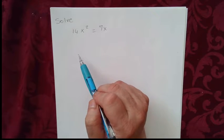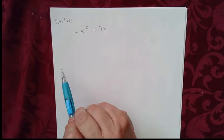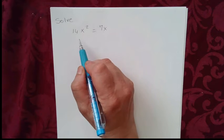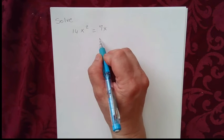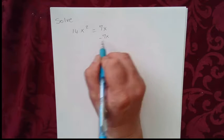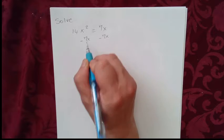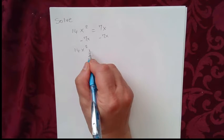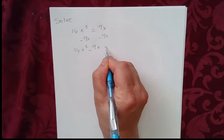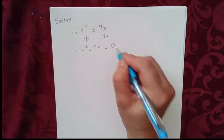Now to solve this quadratic equation we need to take everything on one side. So let's go ahead and take 7x to the left side of the equation. So we subtract 7x on both sides of the equation. We get 14x squared minus 7x equal to 0.